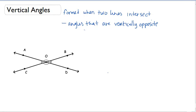These are the vertical angles. Let's look at this example below. In this example, we have line AD intersecting BC.